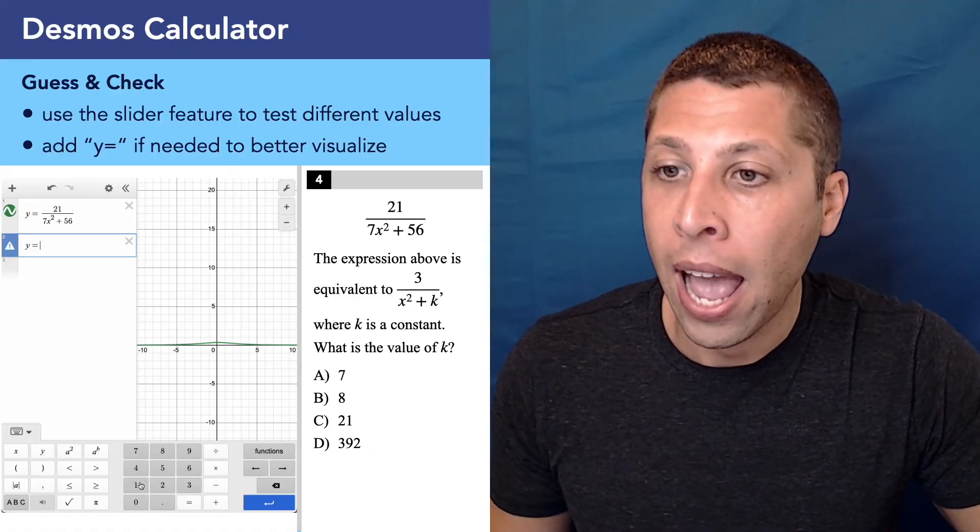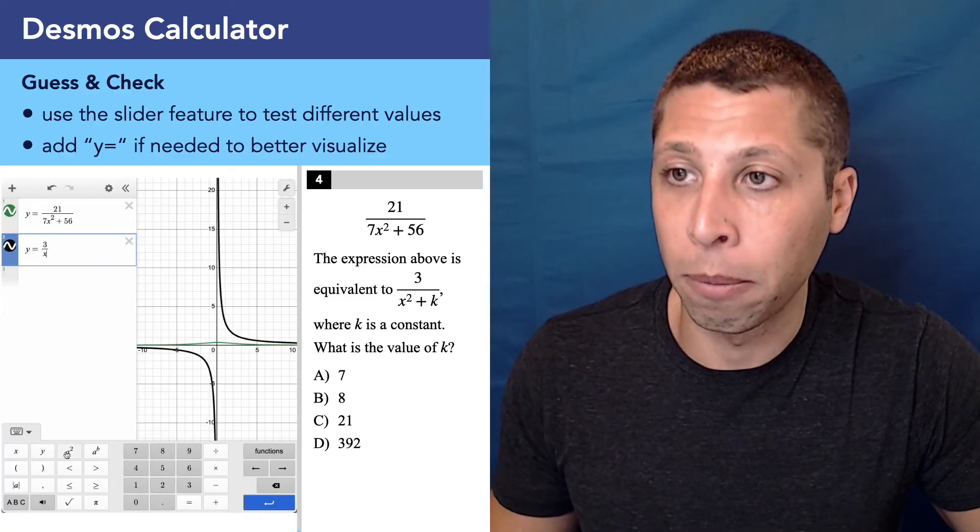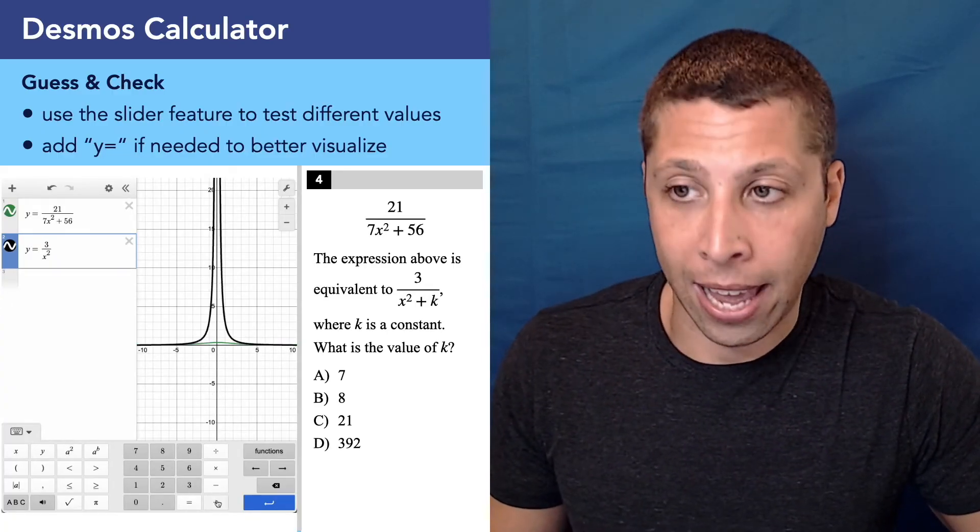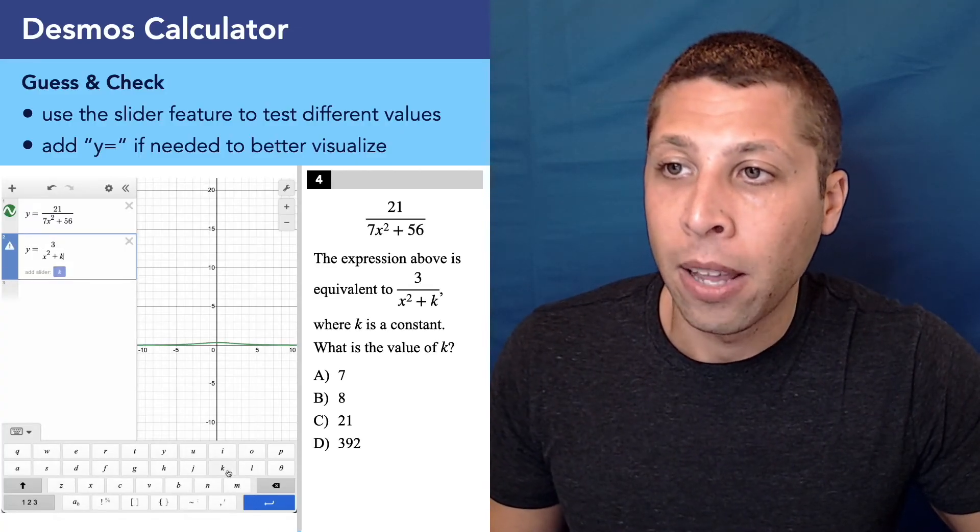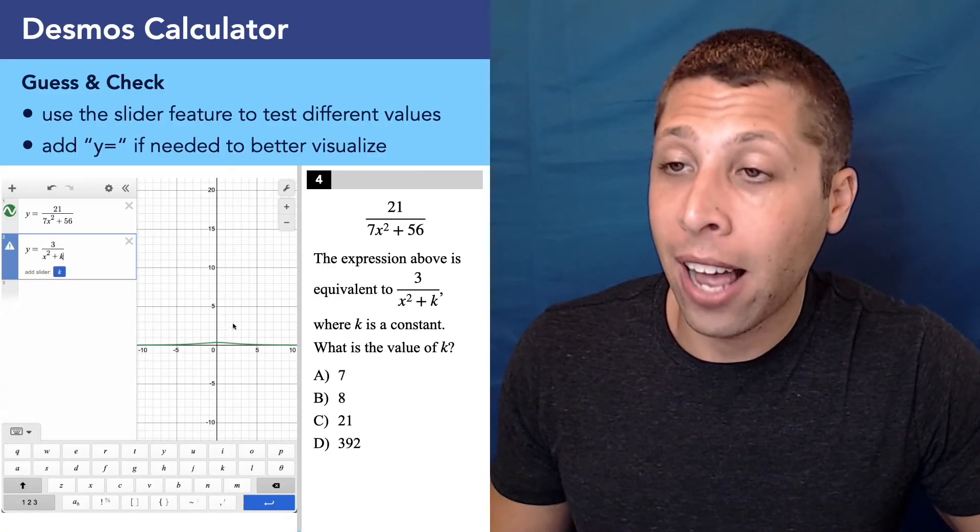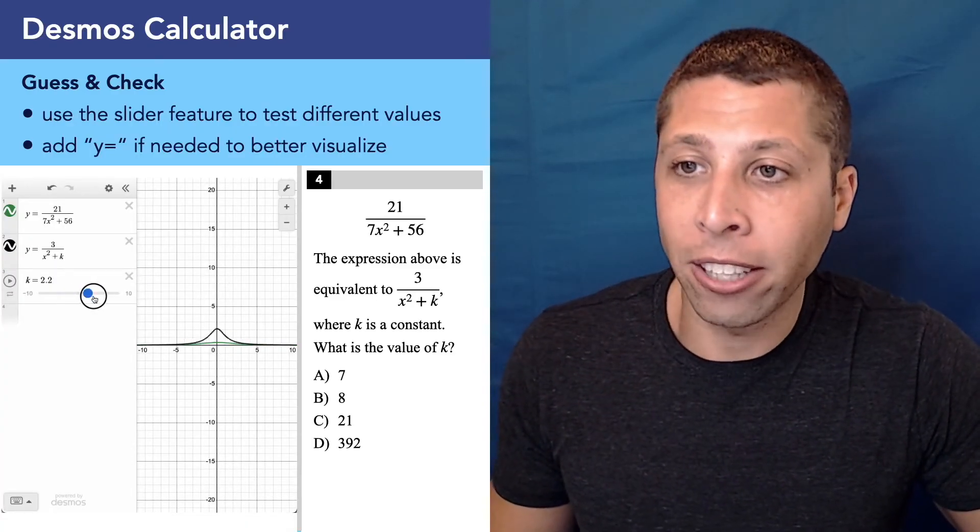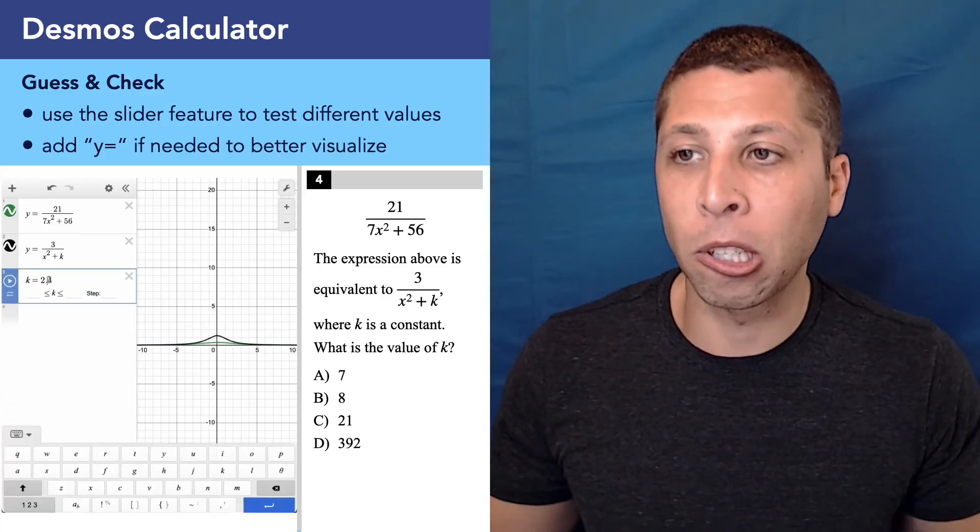Now they're asking us to figure out what the equivalent expression would be. So we can definitely just take this second equation and type it into the second line. And again, I'm going to use a y equals to do that. And we can see the keyboard will let us do all of this if we don't want to type or we don't have a keyboard. And when I hit the k, it's in the letters, and we get this option to add a slider. So we're going to click that and we can see a new line comes up. And it literally is a slider.